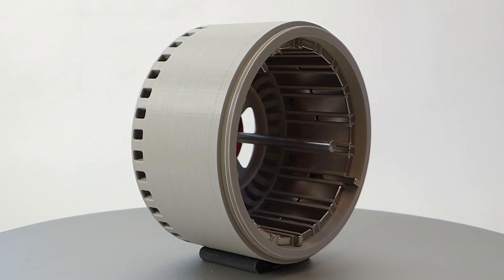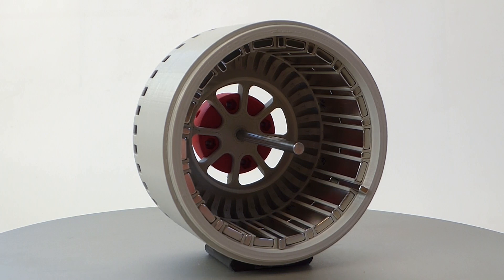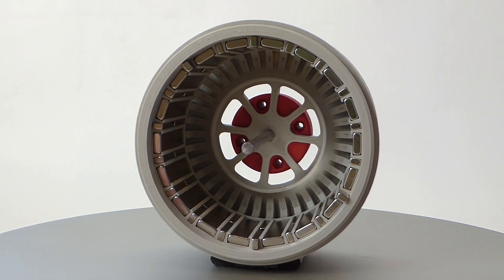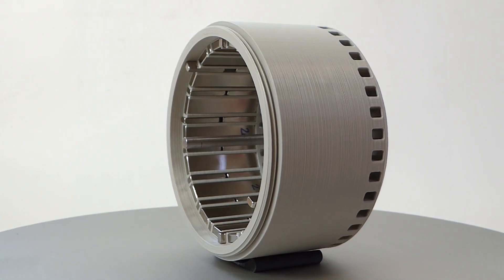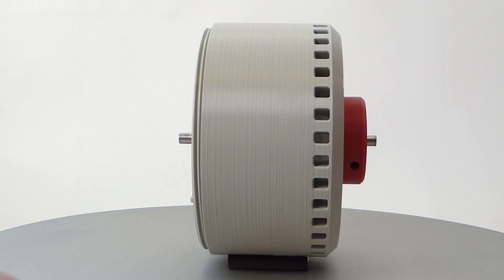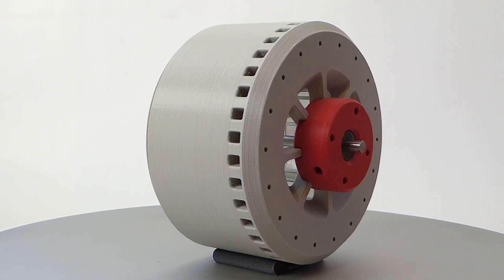In contrast to a regular Halbach array, the sections of the magnets in this motor are not square but rectangular. Maybe my array is a bit less effective but it helps to reduce the total weight.